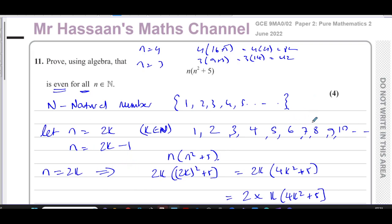Sometimes students say it's only worth two marks. In the IAL, proofs are sometimes worth very few marks, possibly because this is a topic not well understood by many students and examiners don't want it to cost those students too dearly. That's why they make it worth less than the work it actually entails.